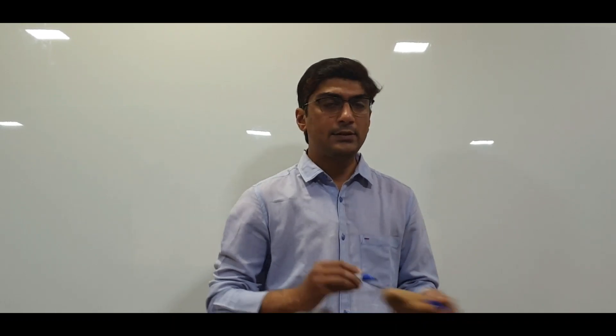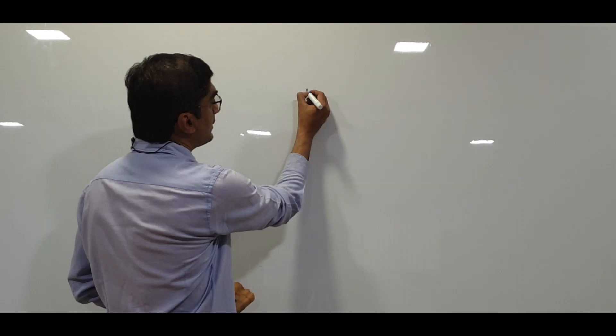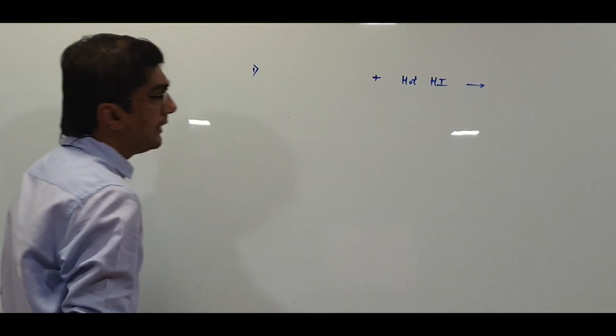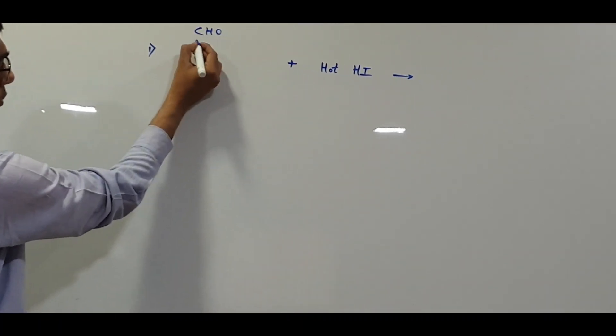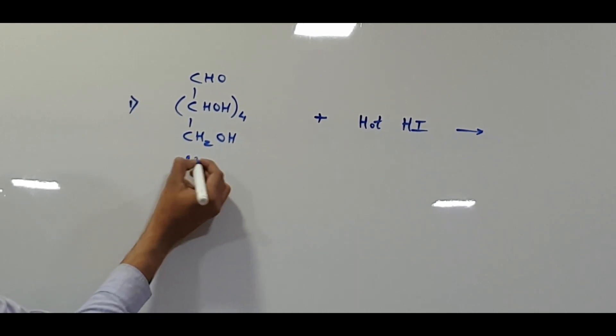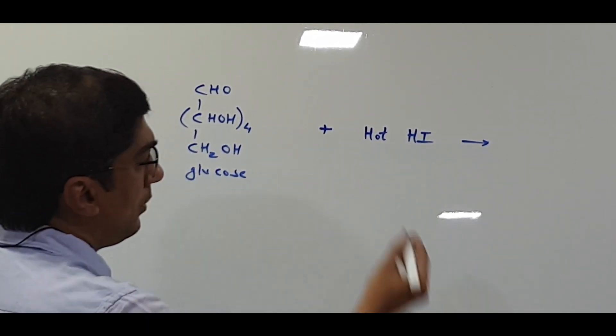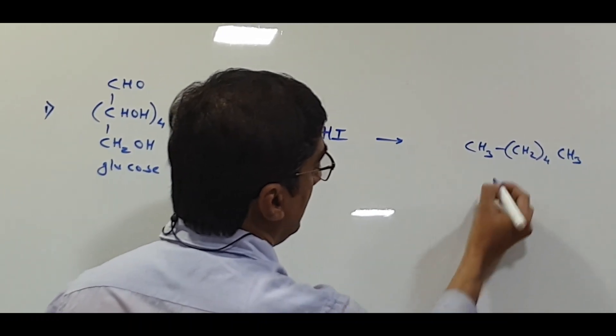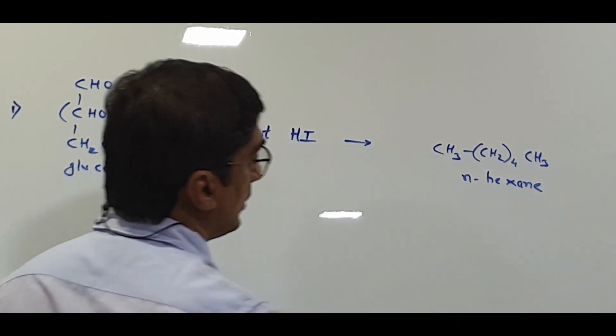Another point would be reactions of glucose. These reactions can also be used to predict whether a given carbohydrate is an open-chain structure or a closed ring structure. To prove that glucose is an open-chain structure, we use these reactions, which are extremely important for exams like IIT. The first reaction of glucose is with hot HI. Glucose contains an aldehyde group, then 4 CHOH groups, and then CH2OH. On reaction with hot HI it forms CH3-(CH2)4-CH3, that is n-hexane. So this reaction is a reduction of glucose with hot hydroiodic acid.